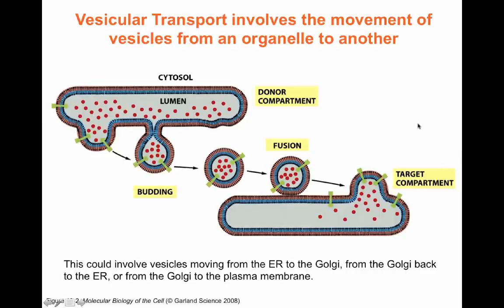Vesicular transport involves the movement of vesicles from one organelle to another. The membrane of the vesicle and the target location are always organized the same way — vesicles are formed in the same orientation as the donor compartment and fuse in the same orientation at the target compartment. This can involve vesicles moving from the ER to the Golgi, across the Golgi, back from the Golgi to the ER, or from the Golgi all the way to the plasma membrane.